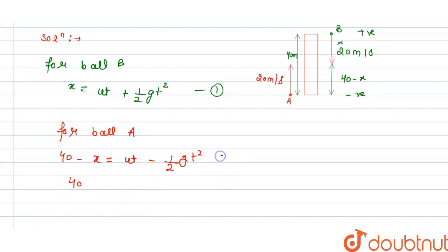This is our equation 2. If we add 1 and 2, we get x and x cancel out, so we get 2ut. This will become 0, so we get this as add 1 and 2.